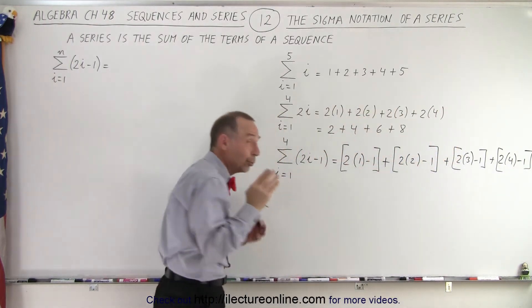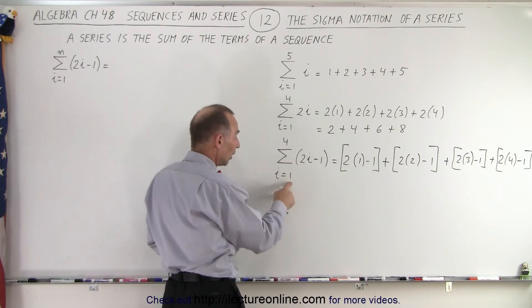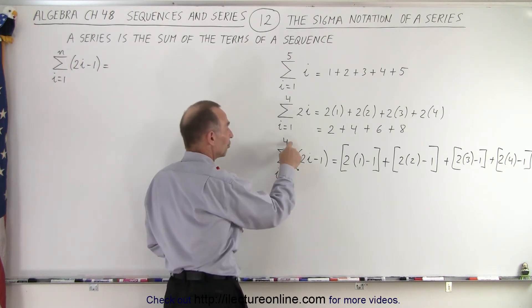So here are the four terms. Why do we know those four terms? Because i goes from 1 to 4 so we have i equals 1, i equals 2, i equals 3, i equals 4.